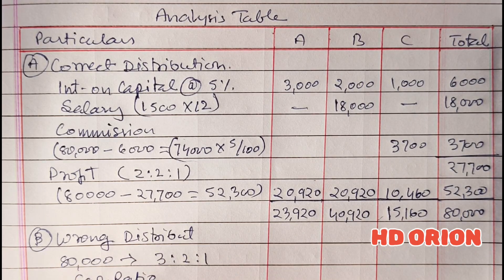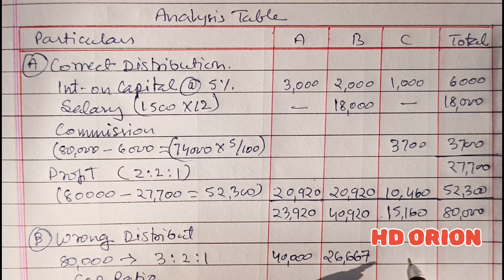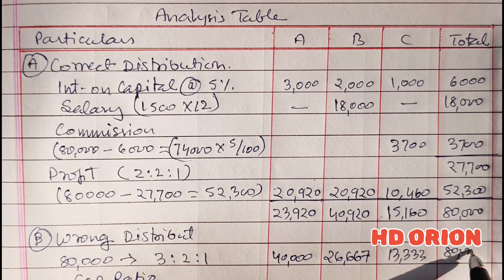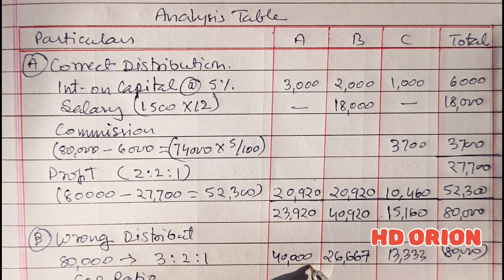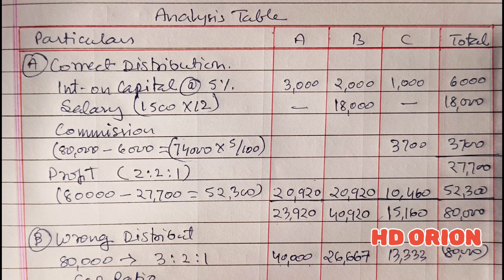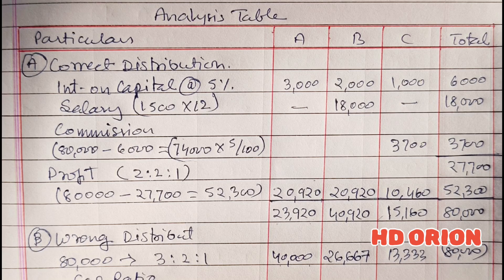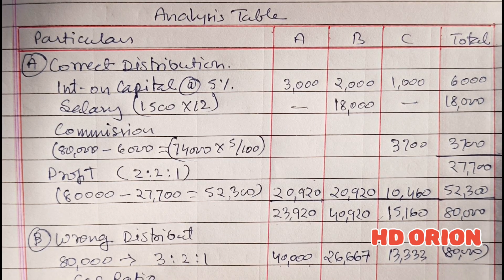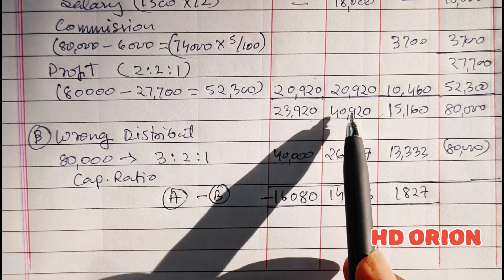In the wrong distribution, the entire Rs. 80,000 was given to the partners in their capital ratio of 60,000:40,000:20,000, i.e. 3:2:1. So A received Rs. 40,000, B received Rs. 26,667, and C received Rs. 13,333. When you compare with the correct amounts: A received Rs. 16,080 more than entitled, B received Rs. 14,253 less, and C received Rs. 1,827 less.